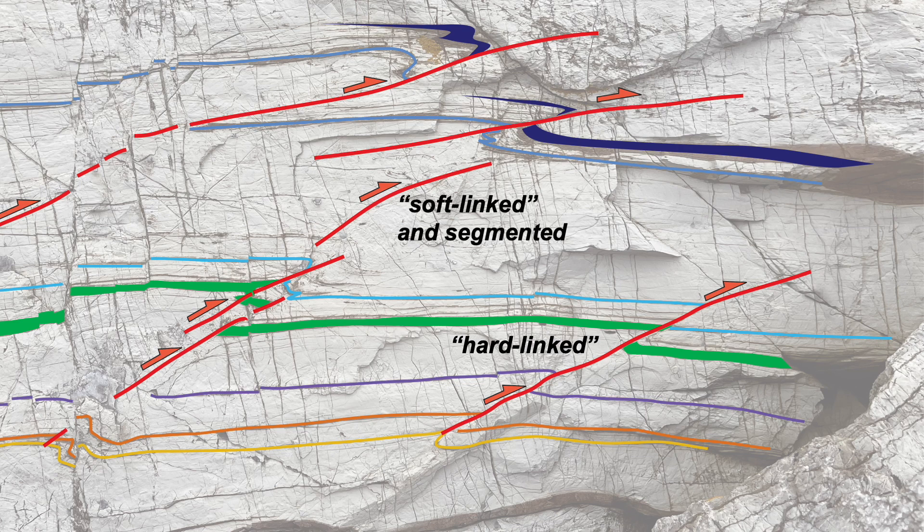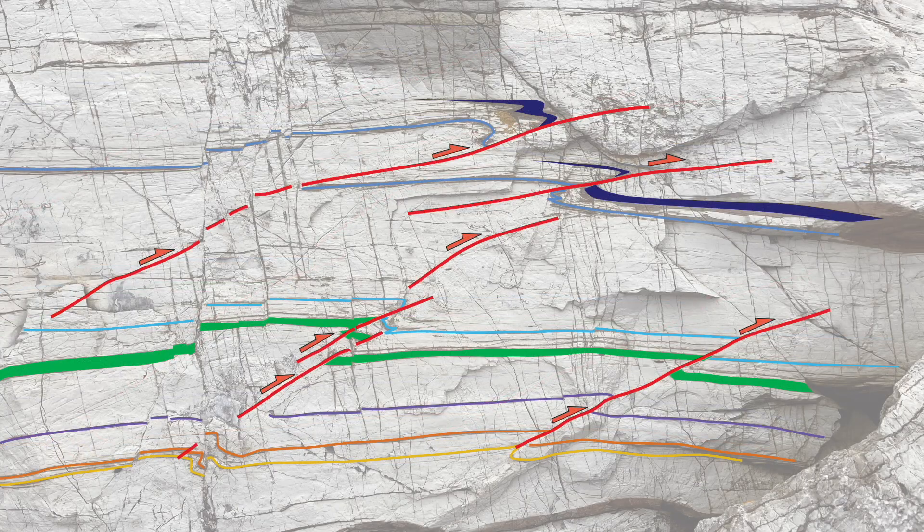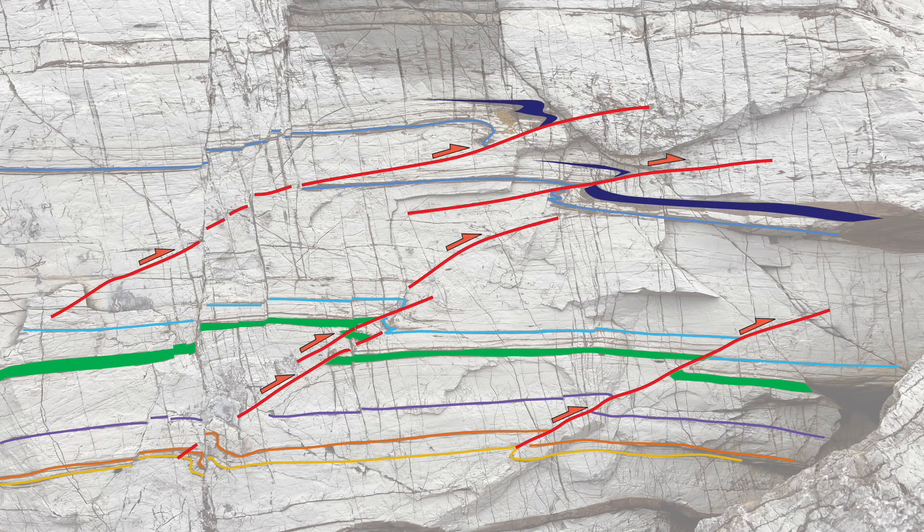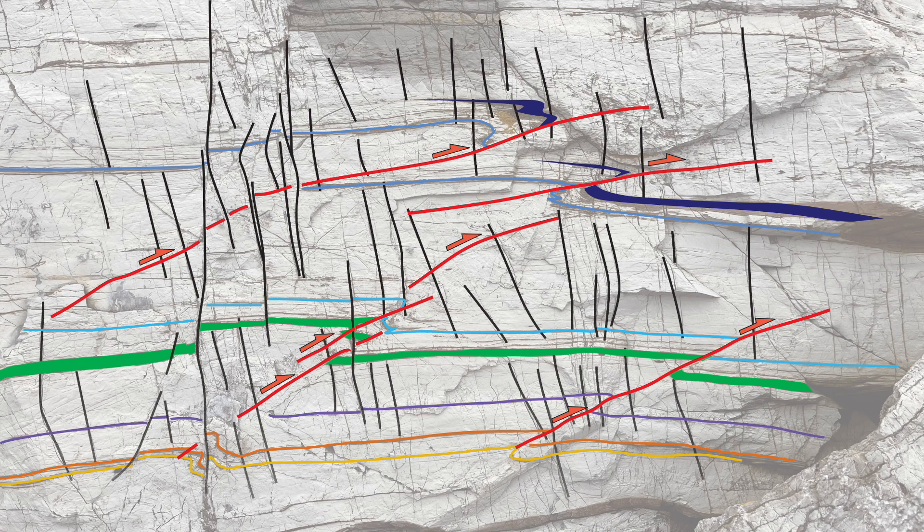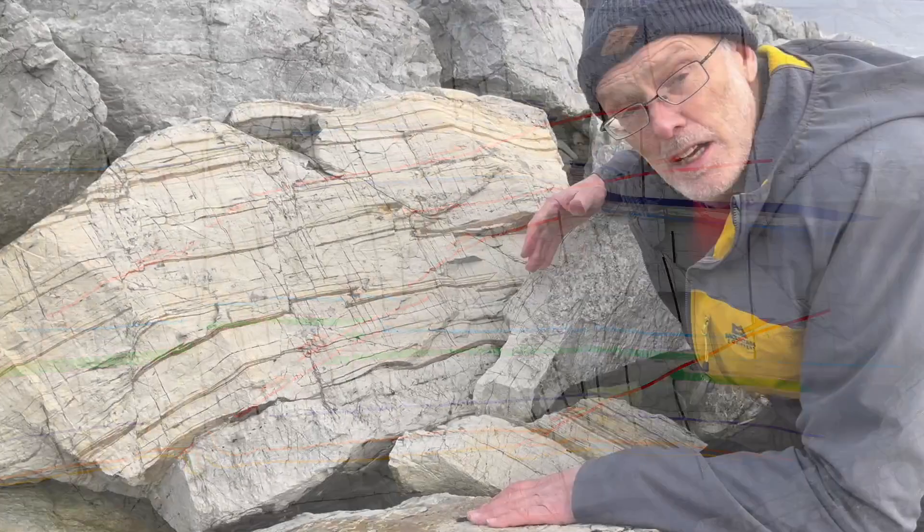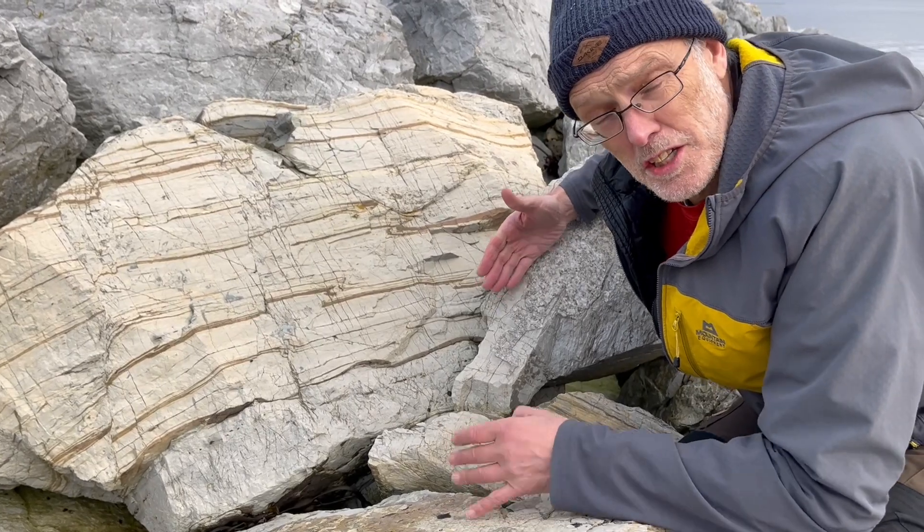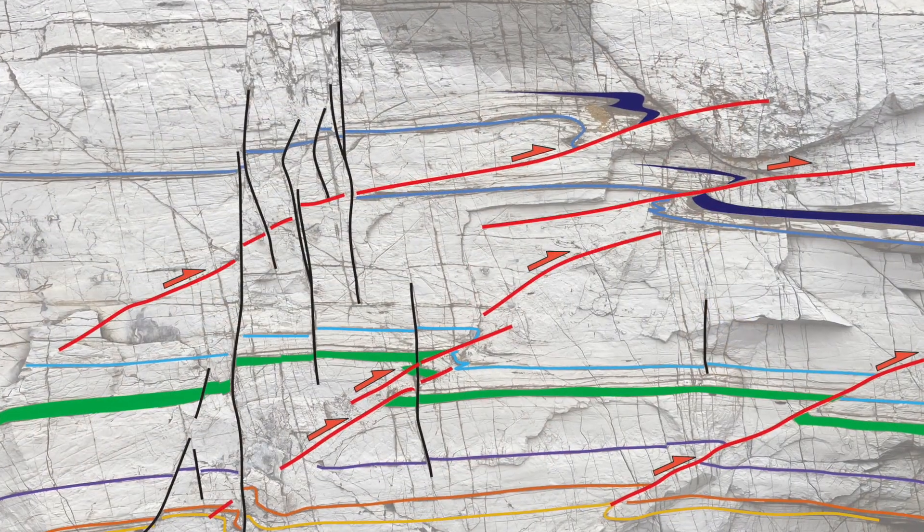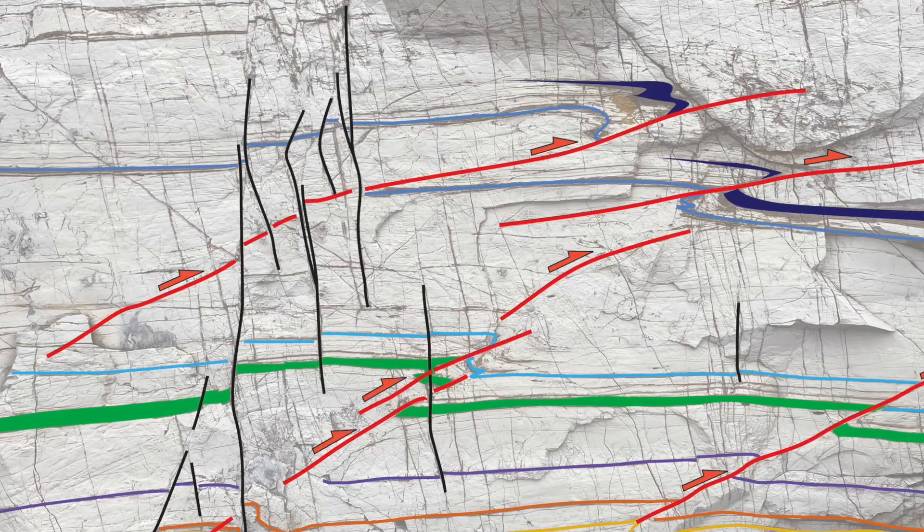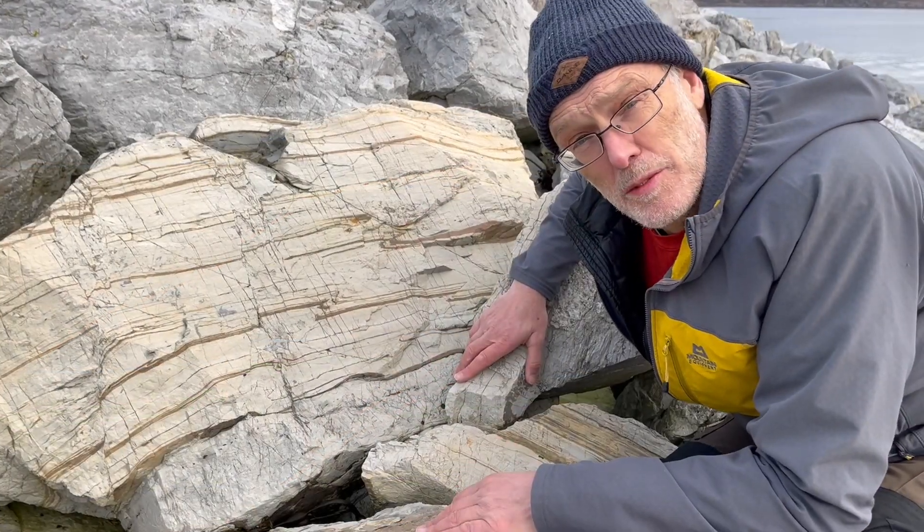But what about the relationships between these inclined thrusts and the steep faults and fractures? The thrusts are cut and locally offset by the steep faults, so the steep faults are younger than the thrusts. So some nice overprinting relationships that we can work out between these steep faults and the inclined structures coming through here.